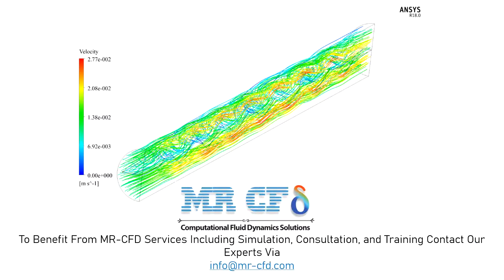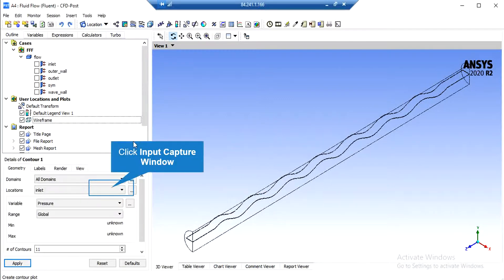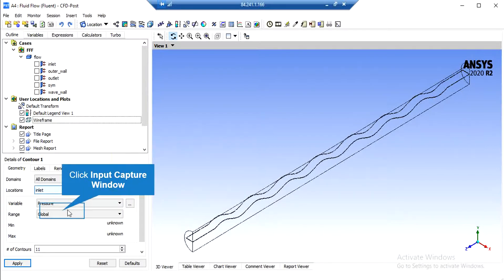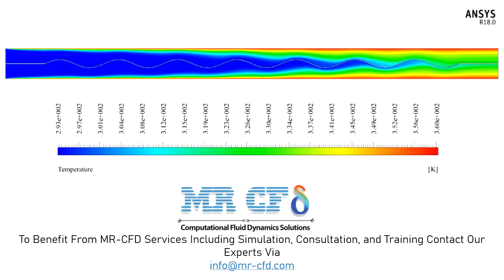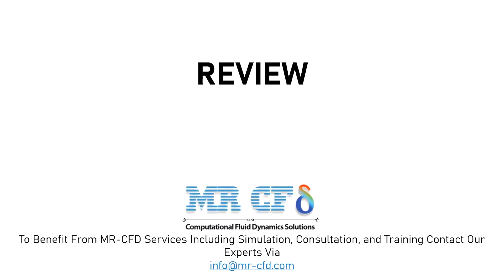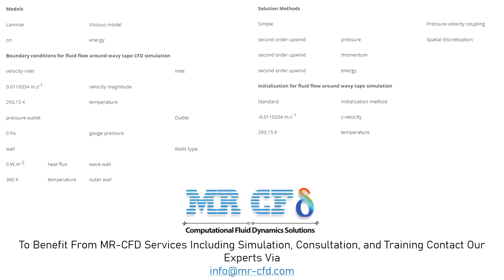In this streamlined contour, you can easily see that the wavy tape has the responsibility of mixing the flow in order to increase the heat transfer rate. Finally, in order to extract the 2D contour, we click on the contour button and accept the appeared window. In front of the location, we select the symmetry boundary in order to see the temperature distribution in the middle section of our tube, then click on apply. In this 2D temperature contour, you can easily see that as the water liquid passes through the tube, its temperature increases. A summary of the different settings and setup used in our project is presented in the final slide.